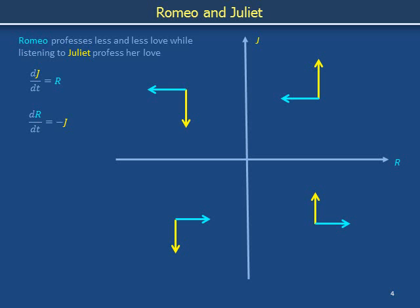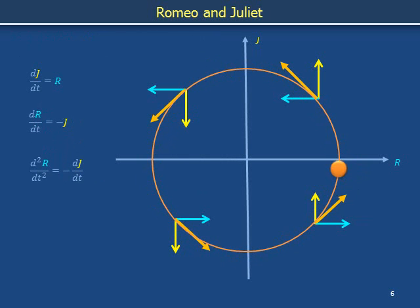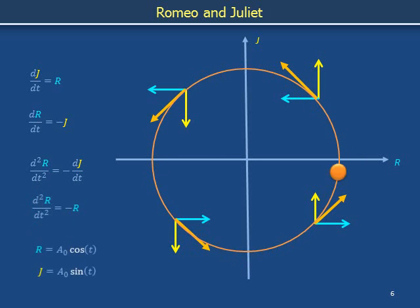This orients the components of the quivers of the direction field in a counterclockwise circuit. Romeo and Juliet chase each other around in a perpetual soap opera. We can also understand that these differential equations lead to oscillatory dynamics by taking the time derivative of the equation containing drdt. d²r/dt² equals negative djdt. Substituting djdt equals r gives d²r/dt² equals negative r. Taking a derivative twice brings us back to the original object with a negative sign out front. This pattern corresponds to the sinusoidal functions, and hence r and j trace out a circle of amplitude a0 in a counterclockwise fashion.